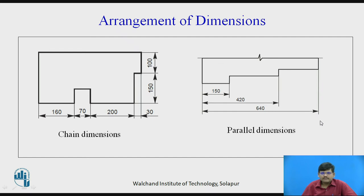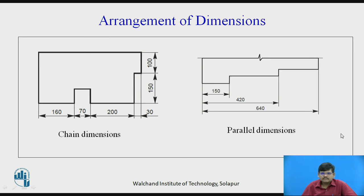Then we have the arrangement of dimensions — how dimensions can be arranged on a drawing. Here the dimensions are in line one after the other, forming a chain-like pattern, and hence called chain dimensions. Then we have parallel dimensions, placed next to each other, one below the other or one above the other, all from a single point of origin as the reference. In a drawing, you can use a combination of both chain dimensions and parallel dimensions.